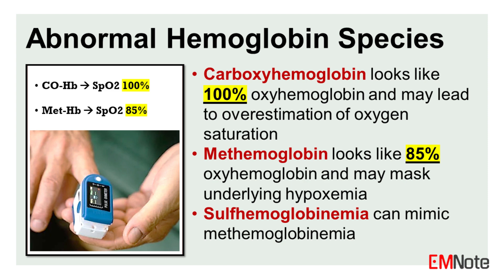Another limitation of pulse oximetry is its inability to detect hypoxemia in the setting of abnormal hemoglobin species, such as methemoglobin and sulfhemoglobin. Methemoglobinemia can occur due to certain drugs, toxins, or inherited disorders, while sulfhemoglobinemia is typically associated with sulfur compound exposure. Sulfhemoglobinemia can mimic methemoglobinemia clinically and by SpO2 measurements. Since oximeters misinterpret methemoglobin as 85% oxyhemoglobin, SpO2 will trend toward 85% in patients with significant methemoglobinemia. Thus, SpO2 can either overestimate or underestimate oxygen saturation in patients with methemoglobinemia or sulfhemoglobinemia.